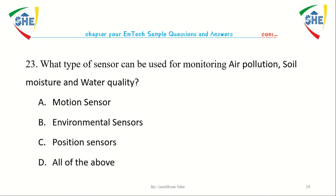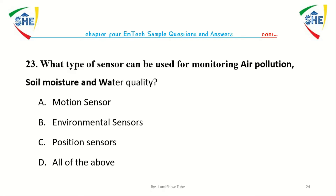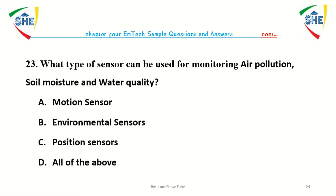Question number twenty-three: What type of sensor can be used for monitoring air pollution, soil moisture, and weather quality? A. Motion sensor, B. Environmental sensor, C. Position sensor, D. All of the above.